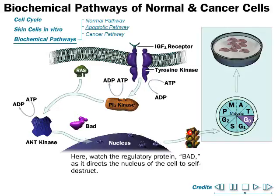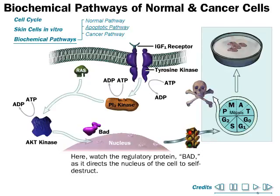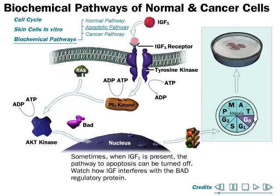One regulatory protein called Bad detects damage and signals the nucleus of the cell to self-destruct. The Bad protein causes the cell to stop growing; after some time it will die. In culture media we can observe all the cells going through this phase of death — apoptosis, or programmed cell death.